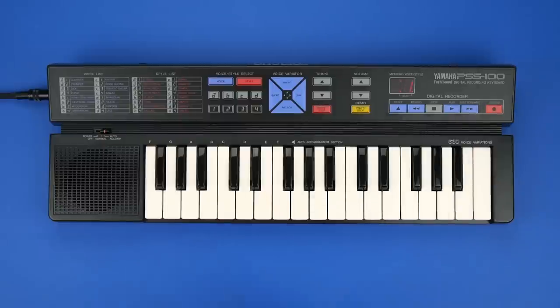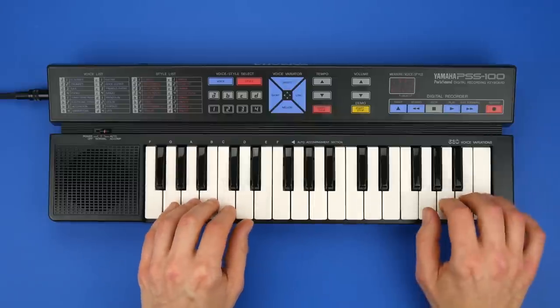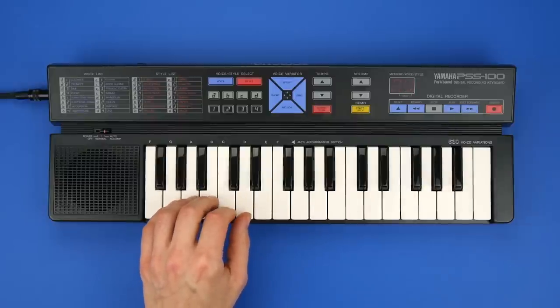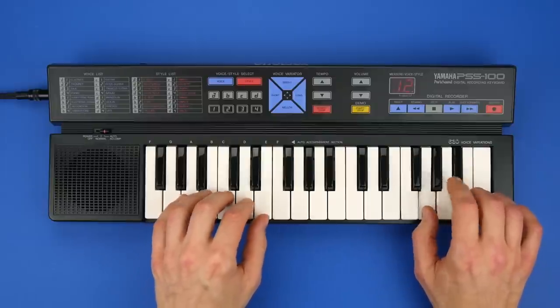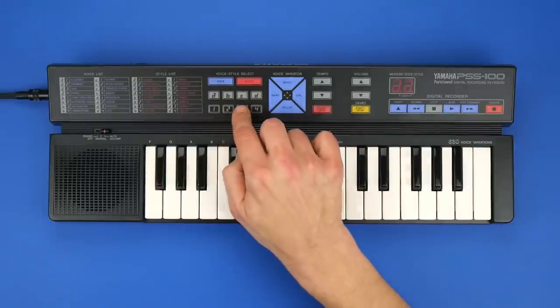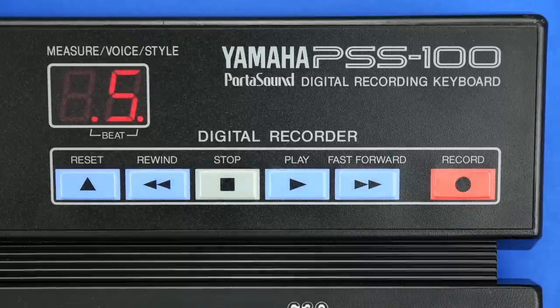You can also record the accompaniment. Start the recording with the start button if you want an intro with drums only. Record something on top with up to three voices. You can change style and instrument while recording. But you don't have to do it in real time. Stop the recording and make some changes. Push record again. The recording will start on the first beat of the displayed measure.